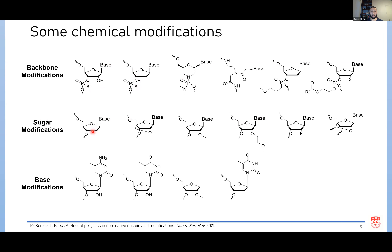Most sugar modifications are at the 2' position. We have the FANA modification or 2'-fluoroarabino, which is widely used in our lab. We also have 2'-O-methyl and 2'-fluoro in approved drugs, as well as the 2'-MOE. Some base modifications are shown as well — there are many more than those shown here. This illustrates the diversity in the backbone, sugar, and base that we can have within oligonucleotide-based drugs.